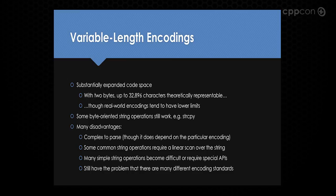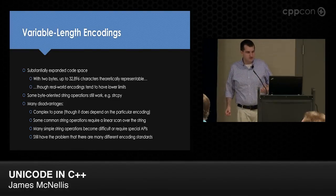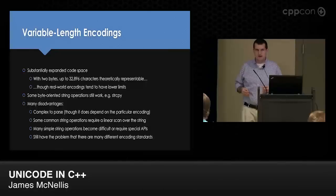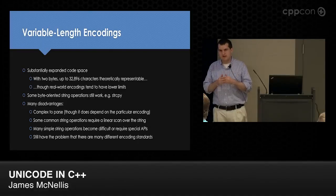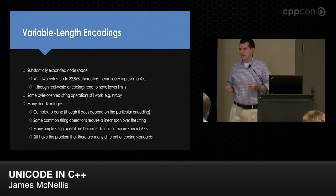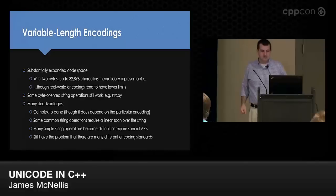With two bytes you can represent up to 32,896 characters theoretically. Some byte-oriented string operations still work, like strcpy. But there are disadvantages: they're complex to parse. There are also encodings that shift between character sets — you might start in ASCII then encounter a control character that says 'switch to another character set.' That kind of encoding is even more complex, because you don't know what encoding you're in if you're pointing somewhere random. Many simple string operations become very difficult. And we still have the same problem of many different encoding standards — if you receive an array of data, you don't know how it's encoded.